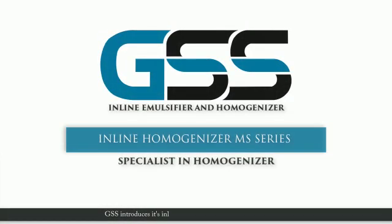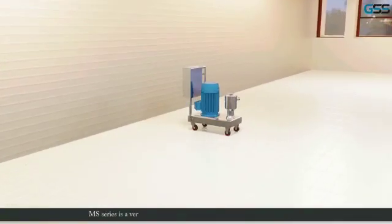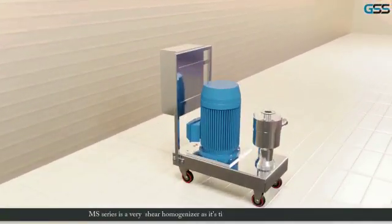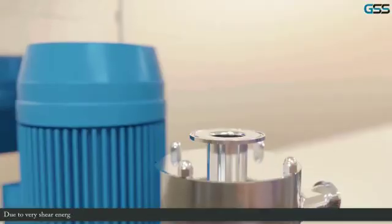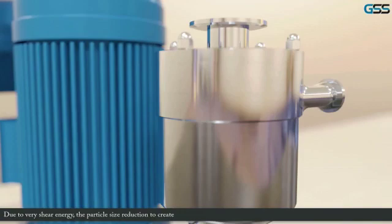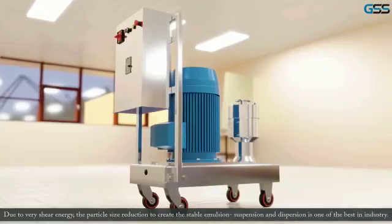GSS introduces its inline high shear emulsifier and homogenizer. The MS series is a very high shear homogenizer as its tip velocity reaches up to 60 meters per second. Due to very high shear energy, the particle size reduction to create stable emulsion, suspension, and dispersion is one of the best in the industry.